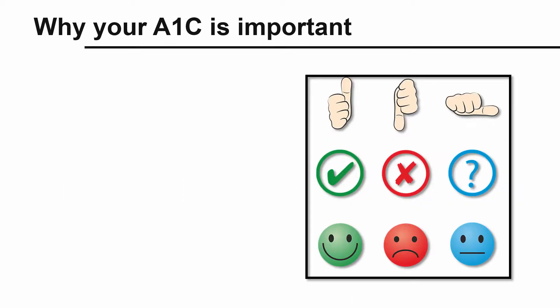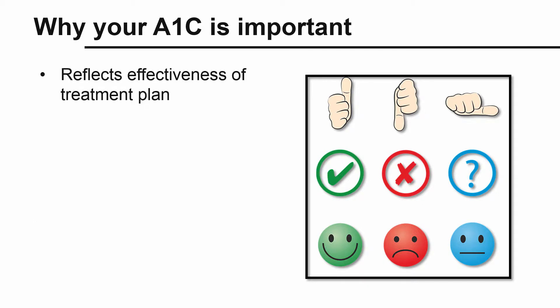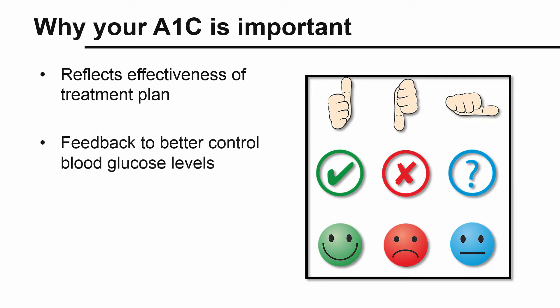When compared to single blood glucose readings, A1c is a better reflection of how well your diabetes treatment plan is working overall. Since blood glucose levels change during the day due to medication, diet, exercise, and the level of insulin in your blood, A1c can also help determine if diet education is needed or if your insulin or medication regimen needs to be adjusted. It provides feedback to help control your glucose levels.